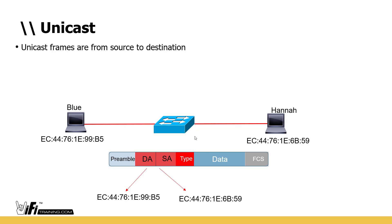Unicast: I'm sending from one to one. For example, Blue — a blue heeler — needs to send a message to Hannah — an American bulldog. Because Blue already has Hannah's MAC address resolved, that message goes out directly one to one. You can see the packet goes directly between the two; I send a frame and get a confirmation that it was received. Or Hannah can contact Blue and Blue confirms receipt.